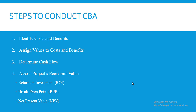To put all this into proper perspective, we are going to use an example of an inventory system. I will walk you through the identification of costs, identification of benefits, assigning values, determining the cash flow, and computing the return on investment, break-even point, present value, and net present value.